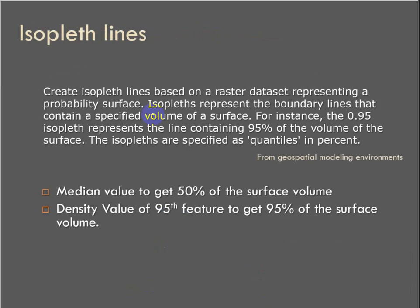From there, we're going to create isopleth lines that represent the probability surface. An isopleth represents the boundary lines that contain a specified volume of a surface. Remember, we're dealing with the density surface here, so the 95 percent isopleth represents the line containing 95 percent of the volume of the surface, and these are called quantiles. What we're going to do is calculate 50 percent of the surface volume to get the core range, and we're going to calculate the density value of the 95th point feature to get 95 percent of the surface volume. From those, we're going to calculate the core and general home ranges.